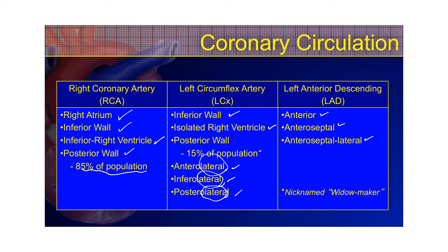The LAD is nicknamed the widowmaker. The left circumflex and LAD both come off the left main coronary artery (LMCA). If the left main were to become occluded, death is pretty imminent. You could also develop three-vessel disease, where all main coronary arteries are affected. Many occlusions are not 100% — they may be 80% or 90% stenosis — but when you get 100%, there's a complete lack of blood flow to the distal areas.